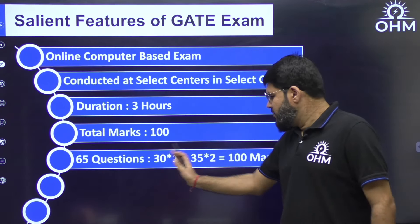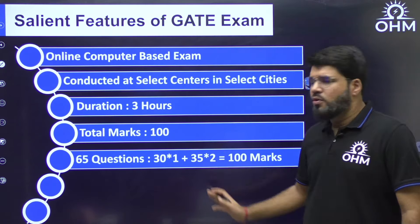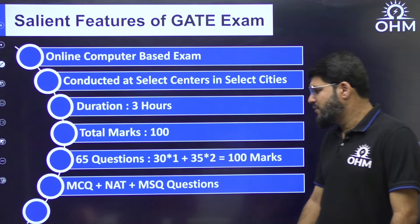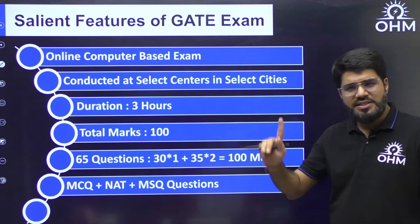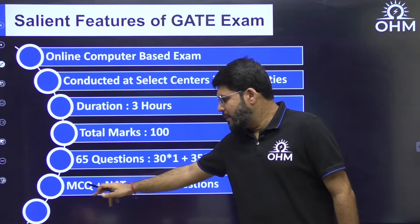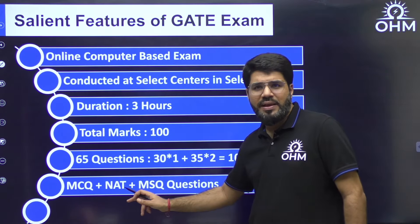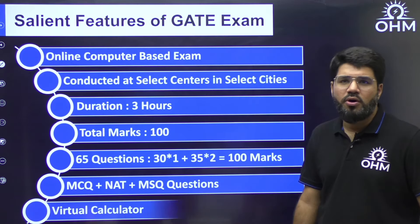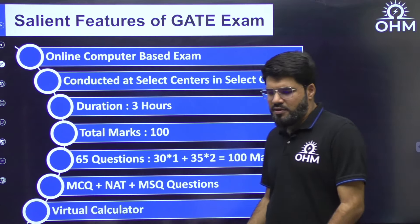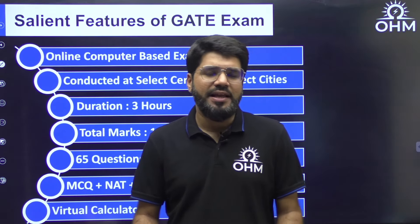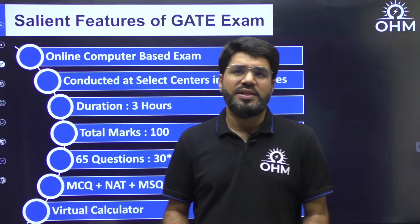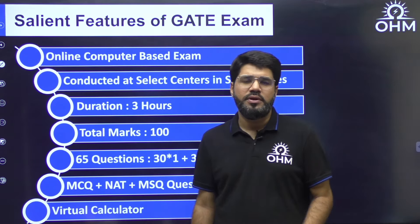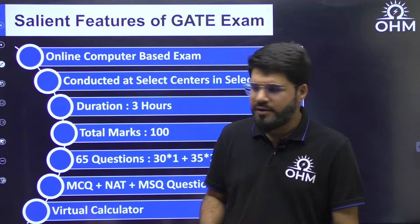We'll break down the weightage of technical and non-technical portions. Out of 65 questions, there are three varieties: MCQ (multiple choice question), NAT (numerical answer type), and MSQ (multiple select question). I'll explain and give examples of all three. Also, this exam comes with an inbuilt virtual calculator — you cannot carry your own physical scientific calculator.